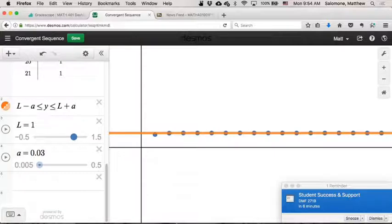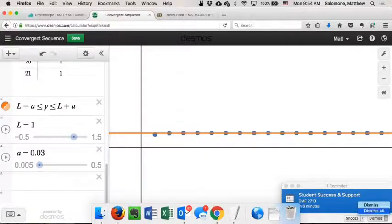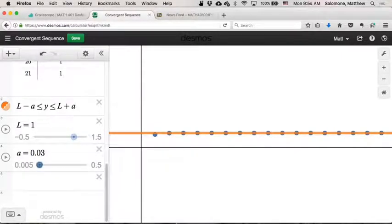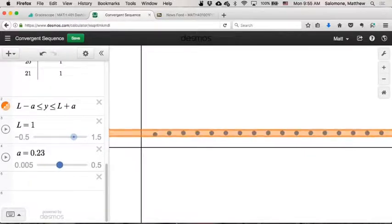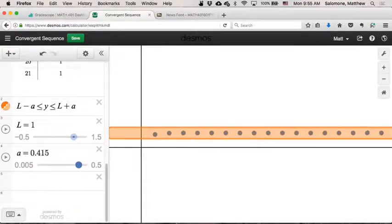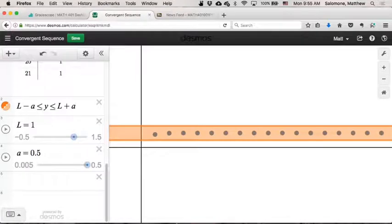So there's the number 1 on this graph, the horizontal line at 1. And what we'd like is we'd like to be able to convince ourselves that these y values of these points, in other words, the values of the sequence, are getting very close to 1. Well, what does very close mean? Suppose that our standard for being very close is that we have to get within 0.5. We have to get within a half a unit of 1. Does the sequence look like it does that?